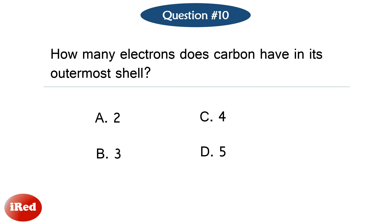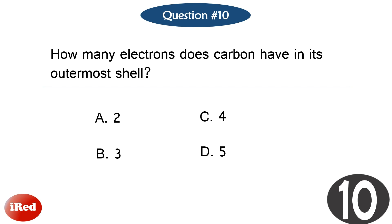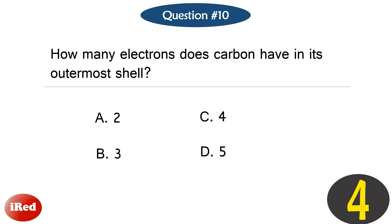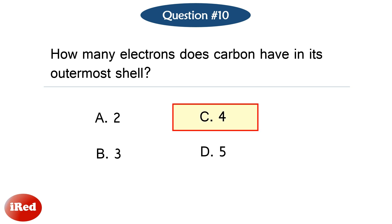Question number 10: How many electrons does carbon have in its outermost shell? The correct answer is letter C, 4.